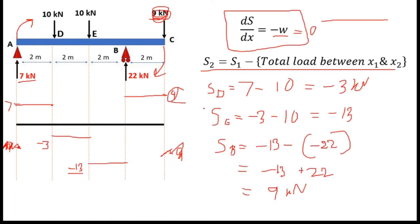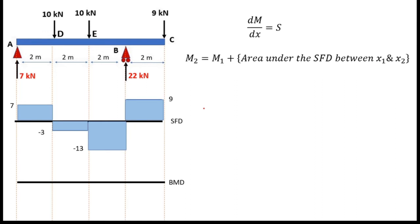For the bending moment diagram we will use these two equations. The first says dM/dx equals the slope of the bending moment diagram equals shear force S. The second gives values: M2 = M1 plus the area under the shear force diagram between X1 and X2. This is the completed shear force diagram we will use.